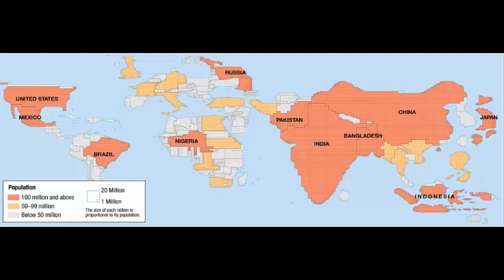A fifth cluster would be here in North America, in the United States. In particular, it's from the Tidewater area up to Boston where a predominance of our population would reside, just looking at this map.